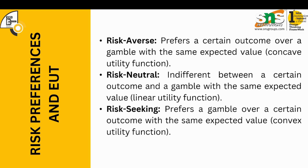With respect to risk preferences, expected utility theory puts people into three categories: risk averse, risk neutral, and risk seeking. Risk averse people prefer a certain outcome over a gamble with the same expected value — they prefer something known and concrete rather than something uncertain. A risk neutral person's preferences may vary depending on the situation. A risk seeking person would prefer a gamble over a certain outcome, believing they may get the best out of the gamble.